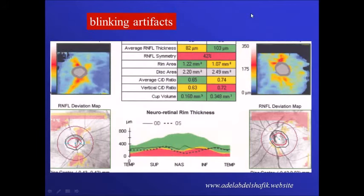Another artifact is blinking. When the machine starts to acquire the image, if the lids were closed during part of the scan, you will see an abnormal red area in that region.